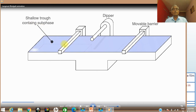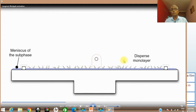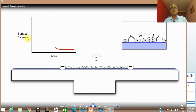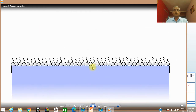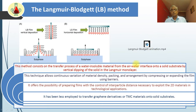In the Langmuir-Blodgett method, there is a shallow sub-phase, two barriers, and a liquid oil drop that is dropped in. Monolayer dispersion takes place, and looking at the graph between area and surface pressure, by bringing the barriers nearer the monolayer is formed. This layer can be lifted in the upward direction, and the block is brought down to create a vertical thin film. The method allows both vertical and horizontal deposition, and is most often used for two-dimensional materials in technological applications. It has also been employed to transfer graphene derivatives and TMC material onto a solid substrate.